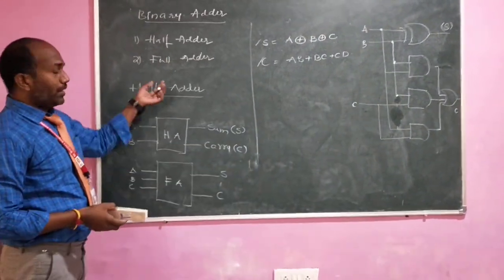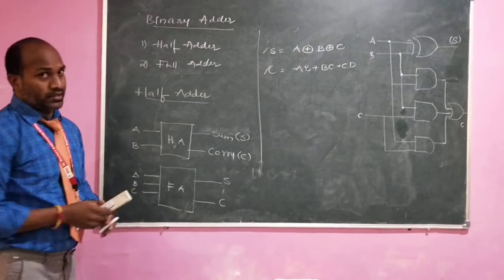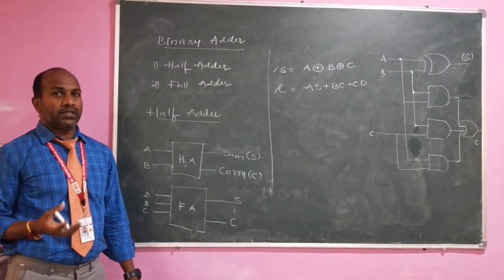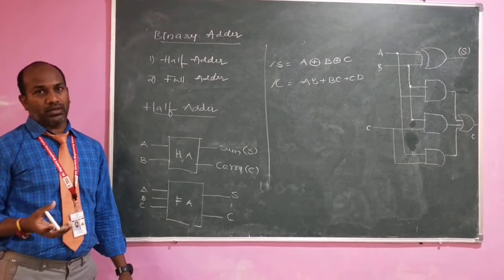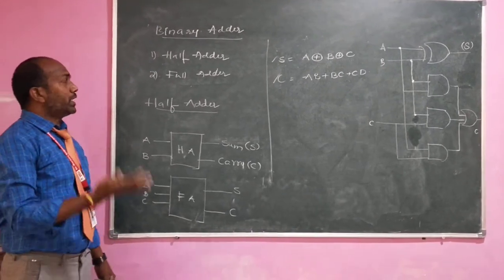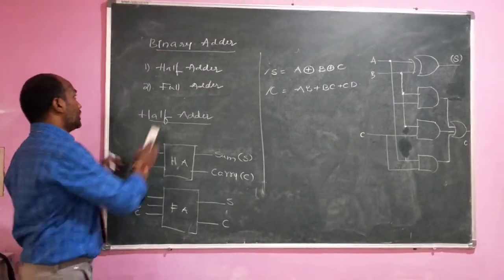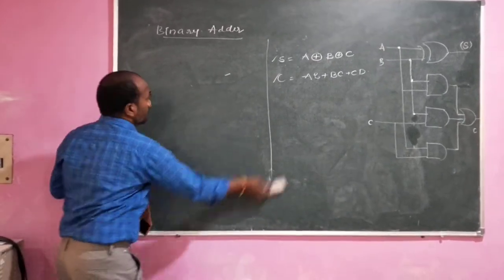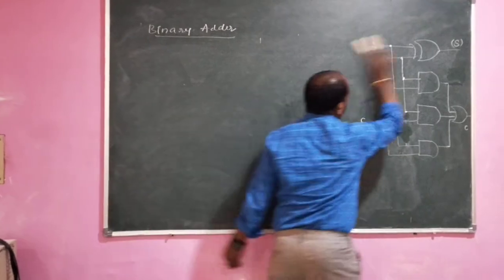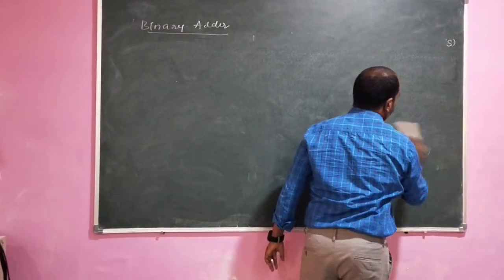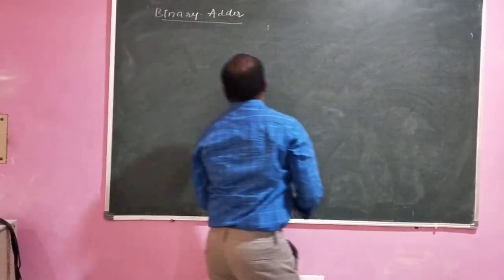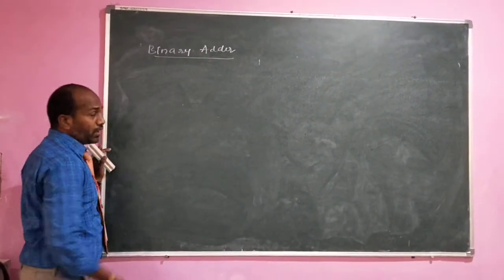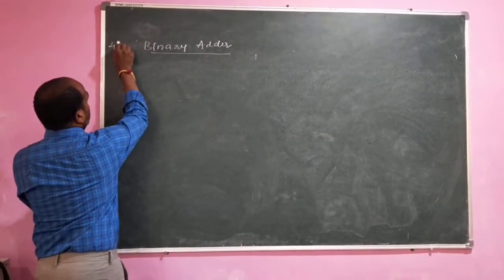Now let us come to the binary adder. A binary adder is a digital circuitry which performs the addition of two numbers — not just digits. The basic building blocks for this binary adder are the half adder and full adder. Let us go with the standard binary adder, which is a 4-bit binary adder.